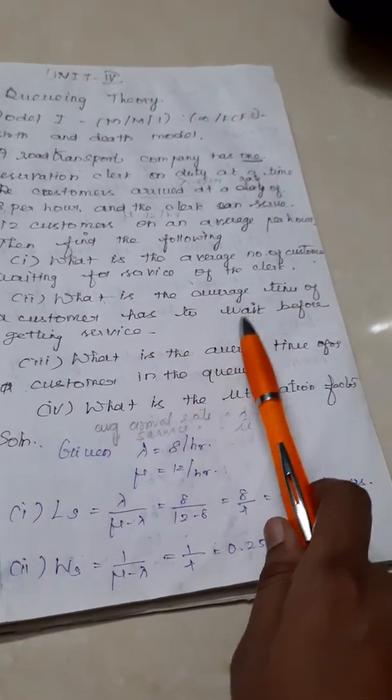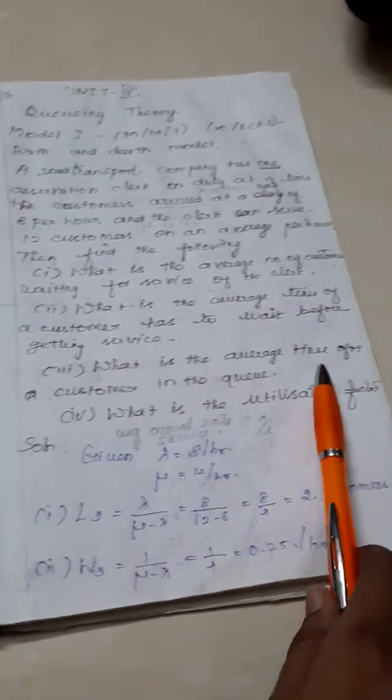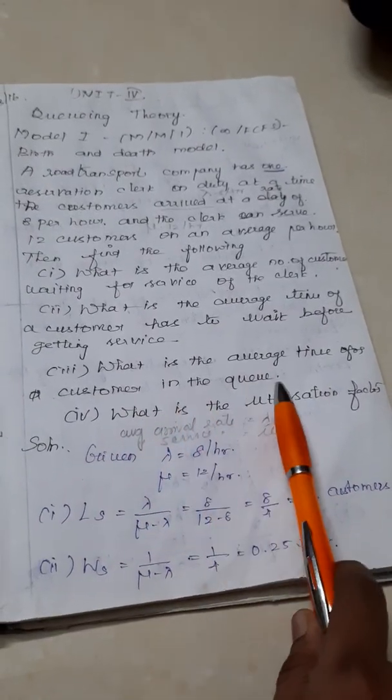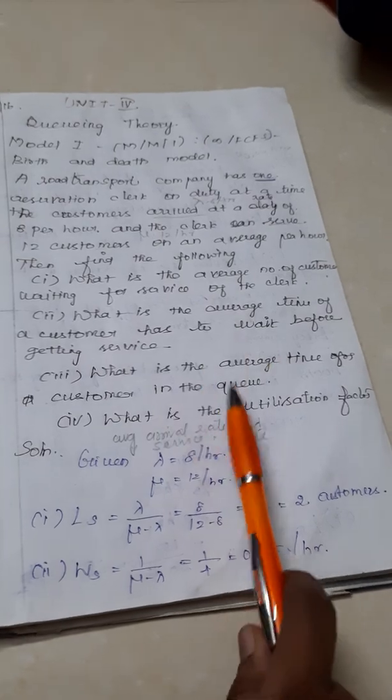So second subdivision, we have to find Ws. Third subdivision, average time for a customer in the queue. Very clear, average time means W, Q means queue, so Wq.